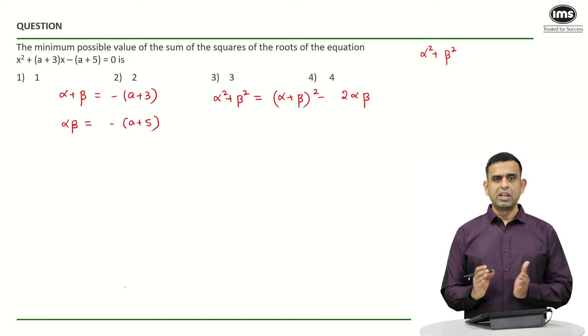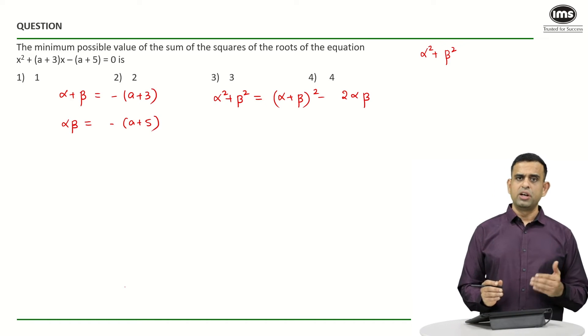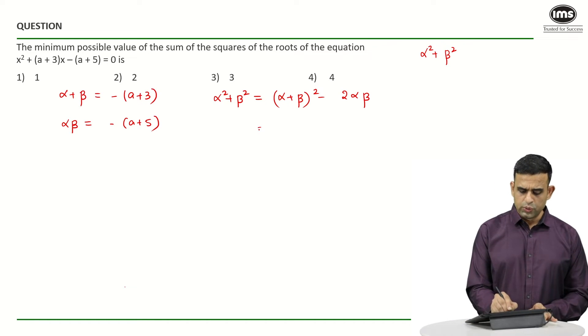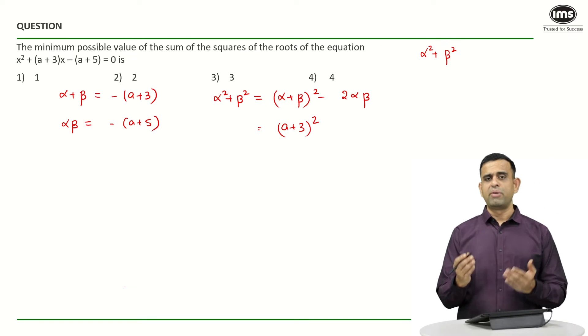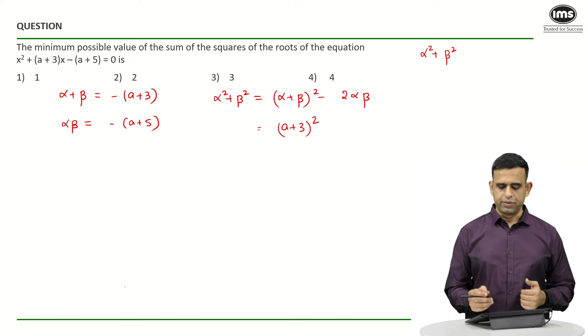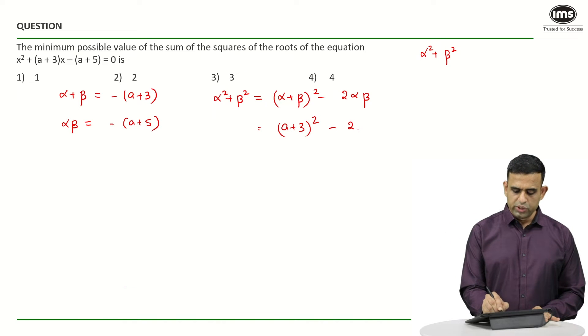So since α + β equals -(a+3), (α + β)² will be nothing but (a+3)². Please note minus times minus becomes positive, minus 2 times -(a+5).